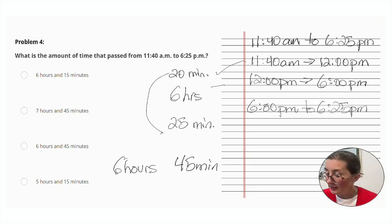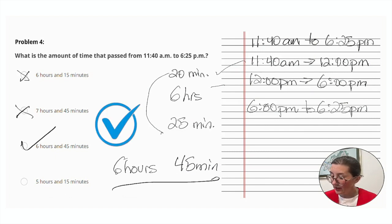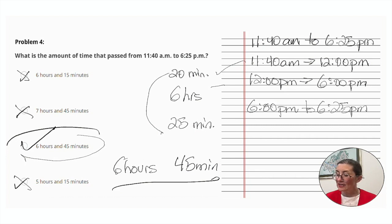All right, let's look at our answer key. Six hours and 15 minutes is not correct. Seven hours and 45 minutes? No. Six hours and 45 minutes? Correct. And it won't be five hours and 15 minutes. So the correct answer here is six hours and 45 minutes.